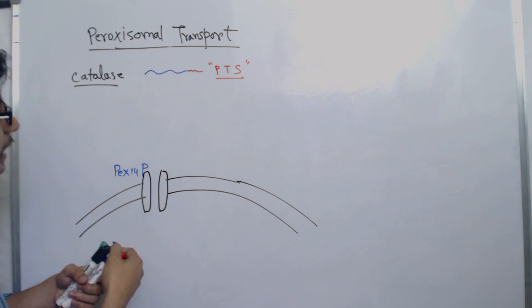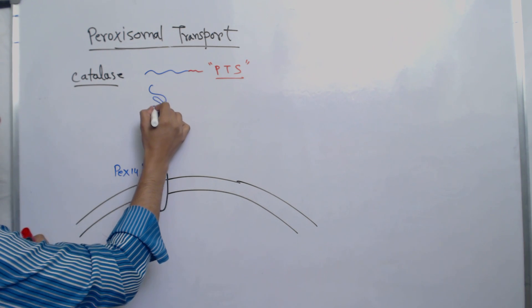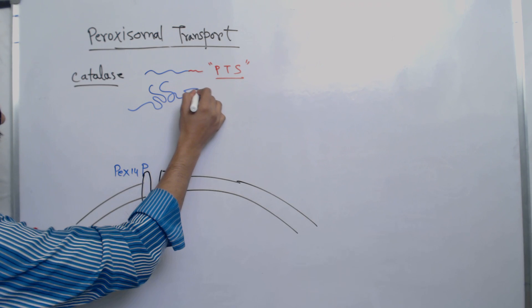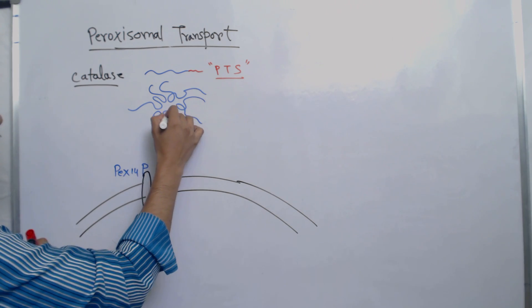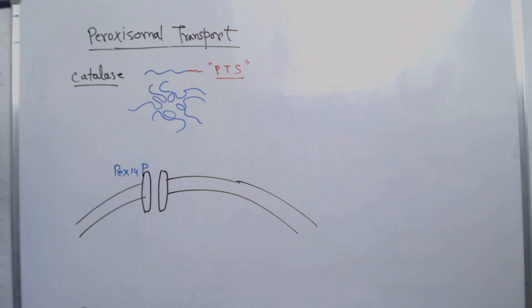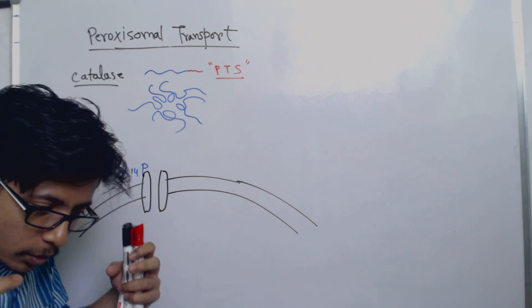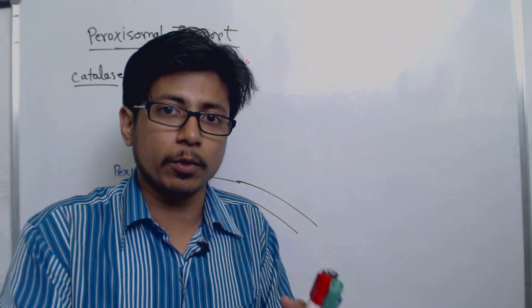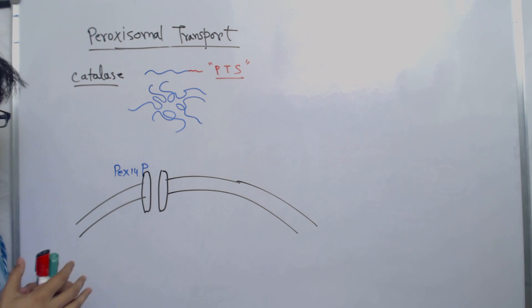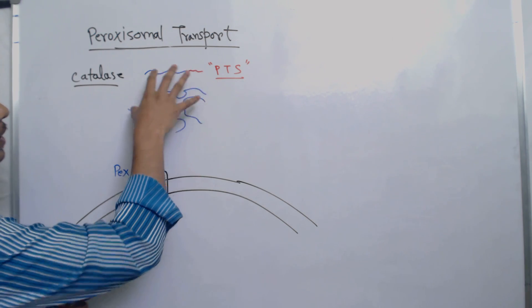We need to fold it to make multi-subunit catalase. The folding is required. Once it starts folding, let's say four such catalases are linked with each other. They should be brought close together before transferring through the translocon.